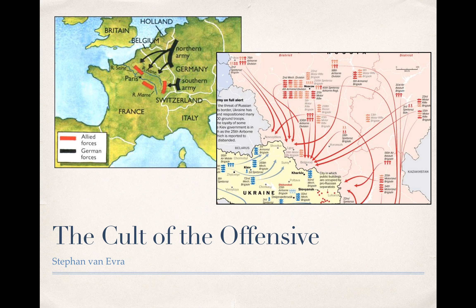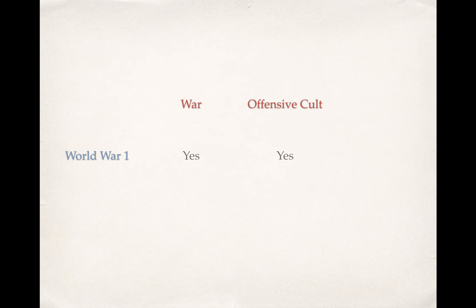Moving on to Van Evra. Van Evra analyzes the same conflict, much of the same data, and comes to a very different conclusion about what caused the war. Like Stossinger, Van Evra declines to provide a lit review and only really examines one case. So let's take a look at what problems this sets up — why we might doubt both Stossinger and Van Evra's theory as a result of their research design.